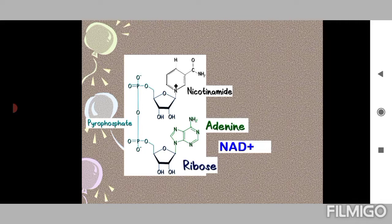Nicotinamide is the most reactive part of NAD plus. The nicotinamide ring is the reactive part. This is because in the oxidized form, the nitrogen atom here carries a positive charge. That's why this is indicated as NAD plus - the positive sign.